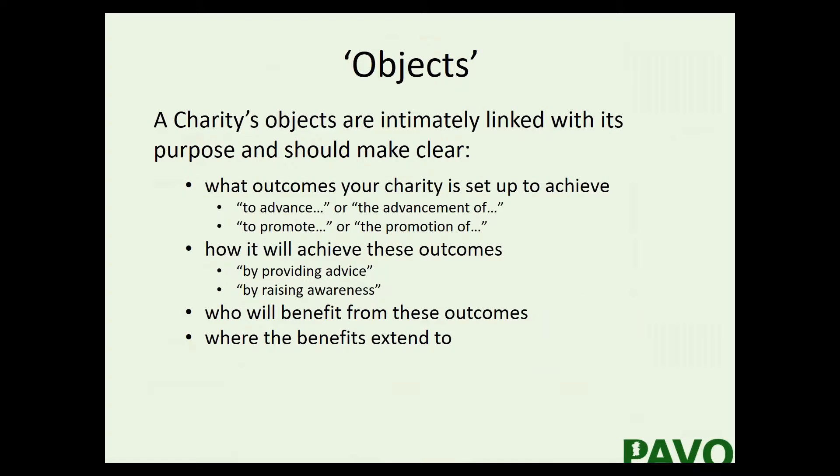A charity's objects are to a certain extent its purposes - they are clearly linked - but they are written in a specific way. They should make clear what outcomes your charity is set up to achieve: it's to advance or to promote something that has an end result. Your objects must also explain how you will set about achieving those outcomes - whether by providing advice, raising awareness, delivering meals on wheels, or other specific or broader activities.